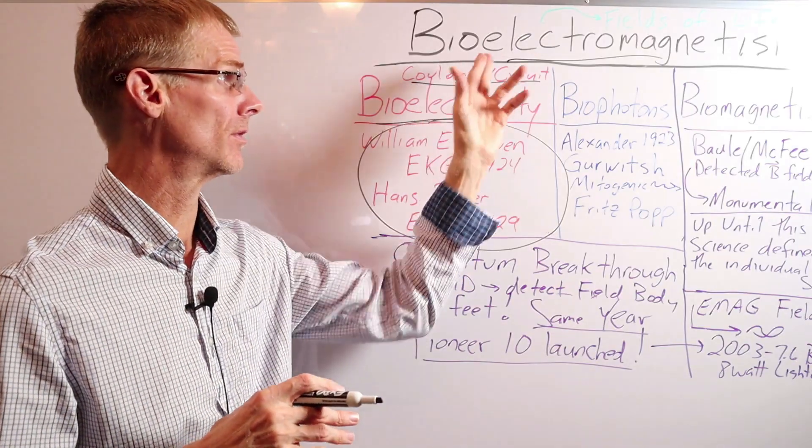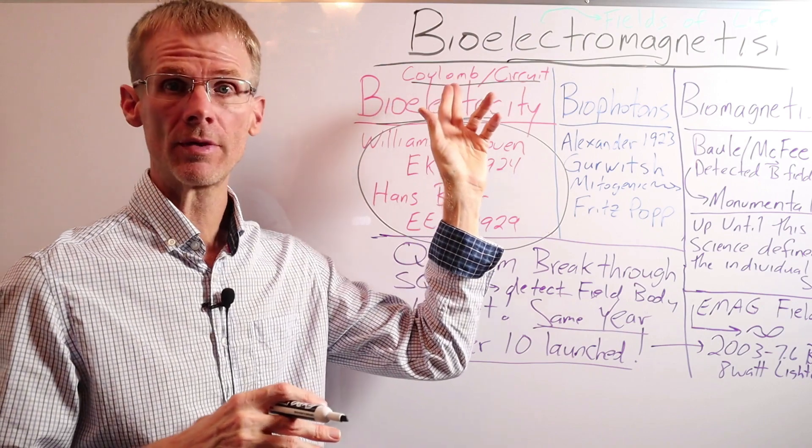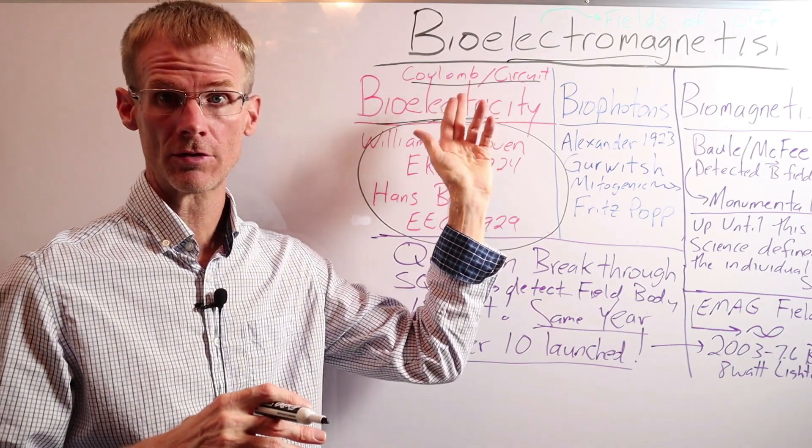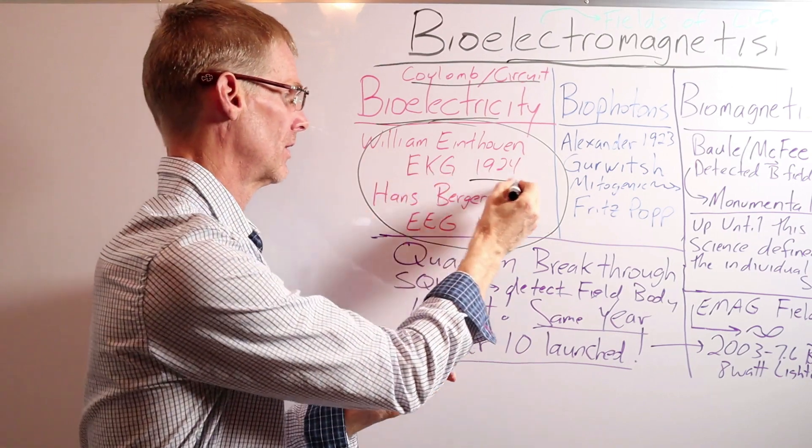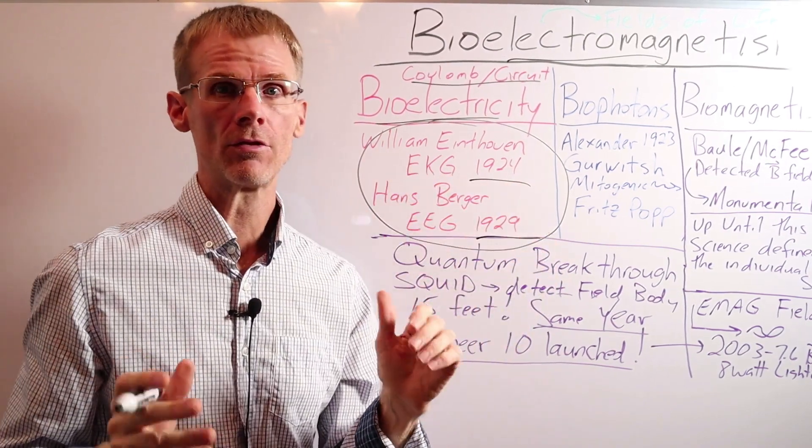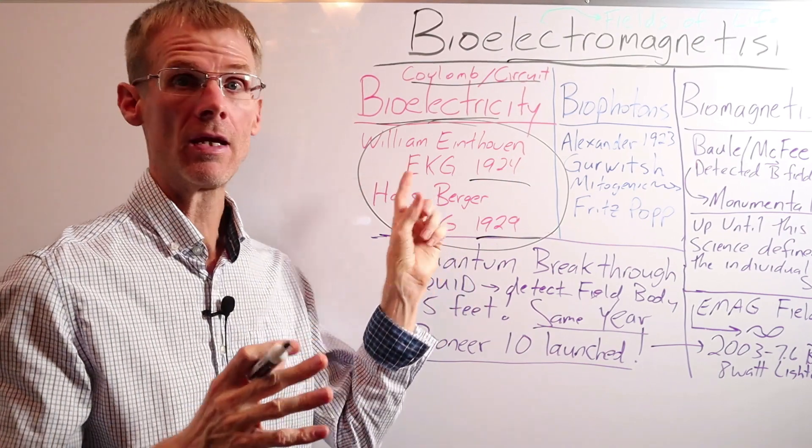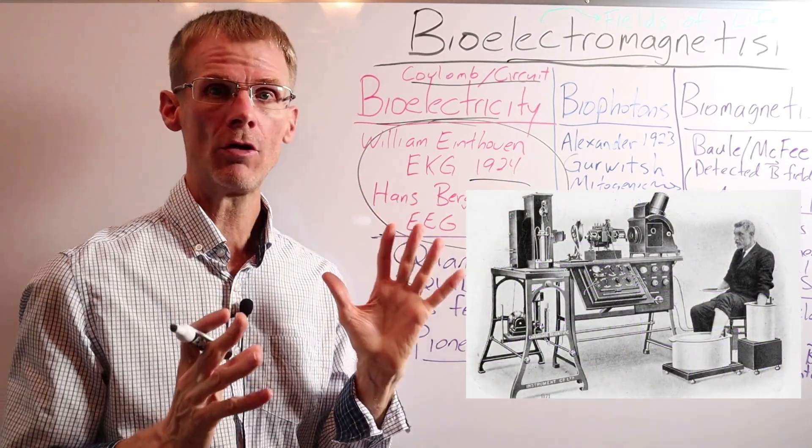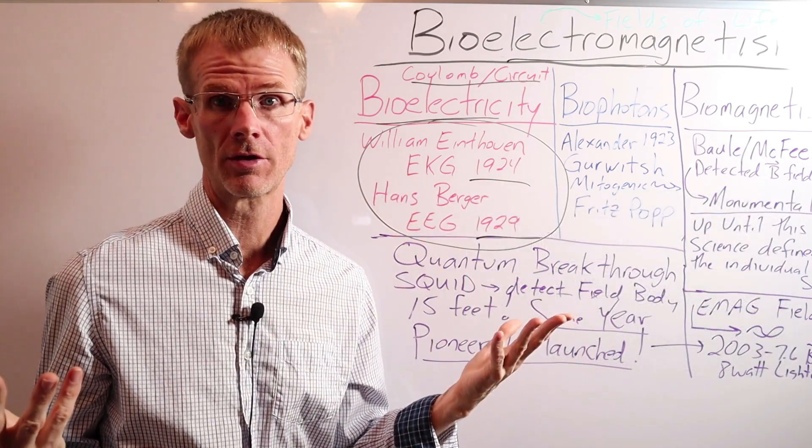So let's start with the first subdivision of bioelectromagnetism, which is bioelectricity. And this deals with static charges or currents or charges in motion. Now there are a couple of really big discoveries in the 1920s related to bioelectricity in the human body. The first was a discovery of the EKG, where William Eindhoven invented the EKG, which of course, as we all know, measures the heart electricity.